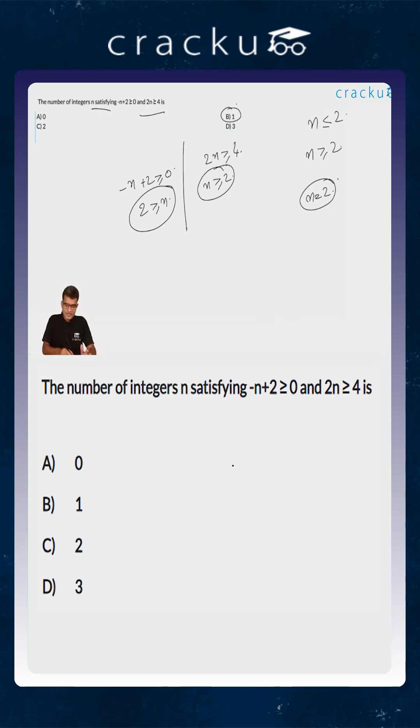Some students might have put the answer as C because they felt that n equals 2 is satisfying this set of inequalities. But we are not asked which n satisfies this inequality. We are asked how many n satisfy this inequality. There is only one such number and that is 2. So, the correct answer has to be option B which is 1.